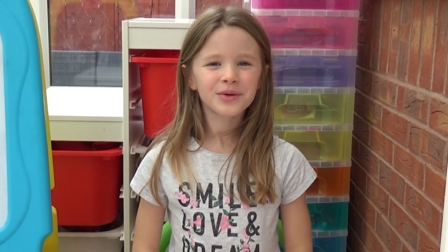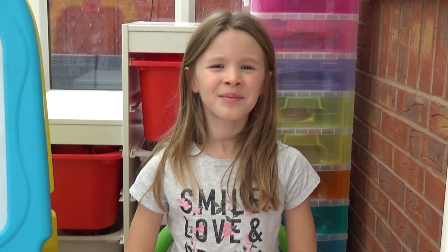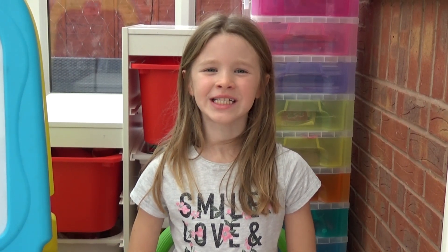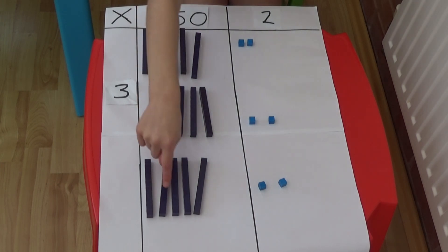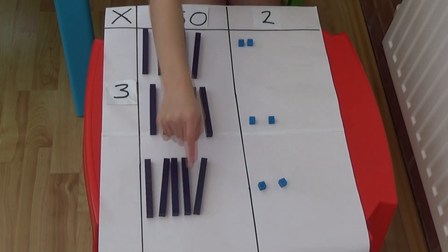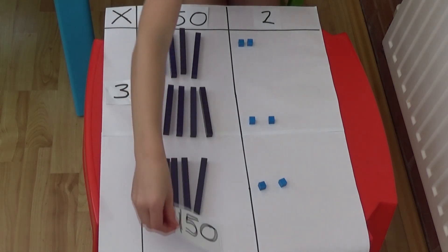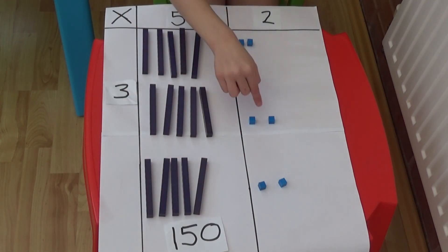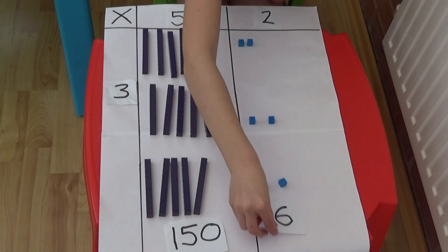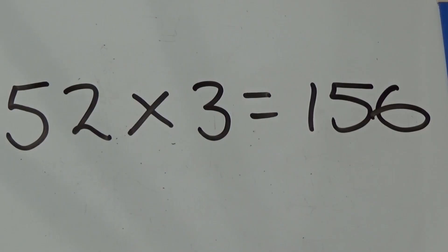We now need to work out how many tens we have and how many ones we have. We have 5, 10, 15 tens, which is 150, and 2, 4, 6 ones, which is 6. So 52 multiplied by 3 equals 156.